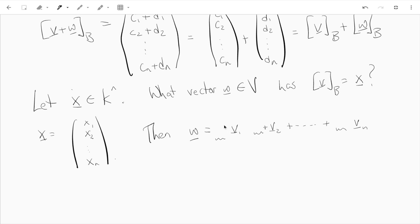Well, the answer is if you want w to have first coordinate x1, well that means you should put x1*v1. If you wanted to have second coordinate x2, well you should put x2*v2. And I messed up the spacing - so it should be x1*v1 + x2*v2 all the way up to xn*vn. And now automatically this vector w will have coordinates x1 up to xn.